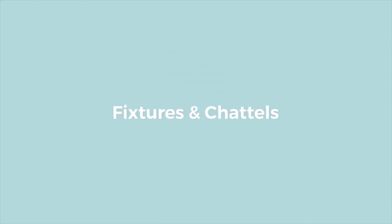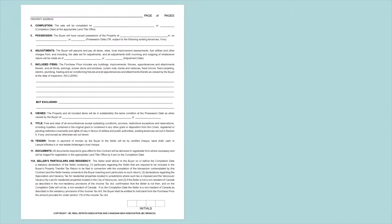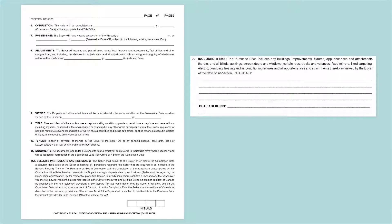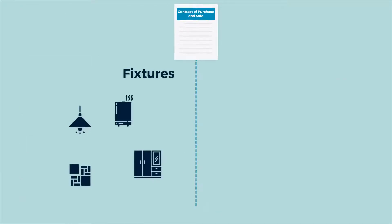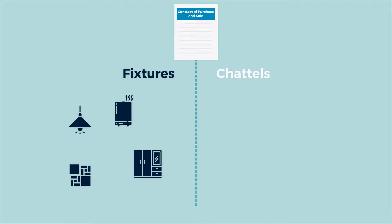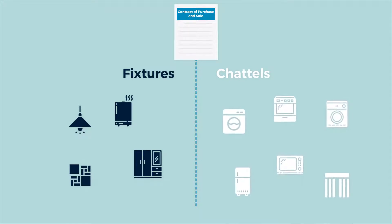Fixtures and chattels. This section lists the items to be included and excluded as part of the purchase and sale. Fixtures are generally objects or improvements that are attached or physically affixed to the property, or cannot be removed easily without causing damage. Hot water tanks, built-in cabinets, lights, and flooring are examples of fixtures. The contract provides that fixtures are included in the purchase and sale unless specifically excluded in the agreement. Chattels are movable items of personal property and must specifically be listed in the offer if they are to be part of the sale.